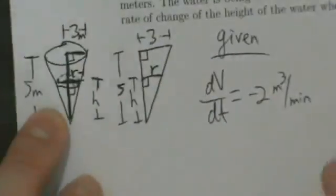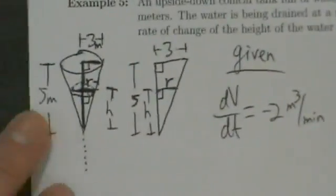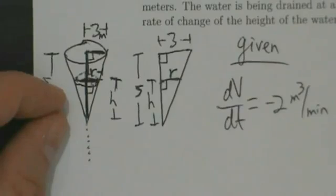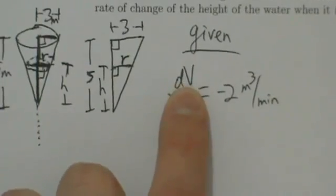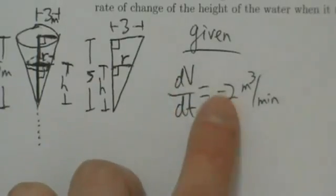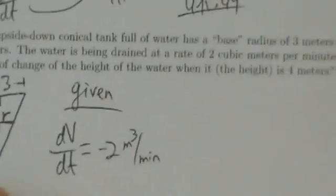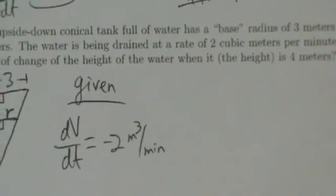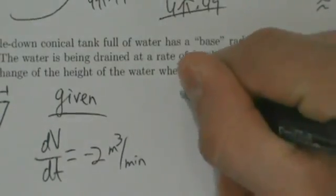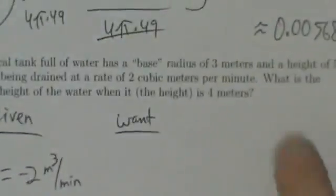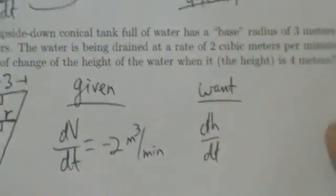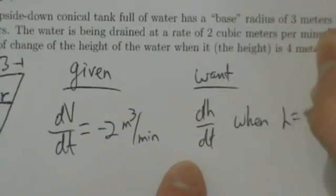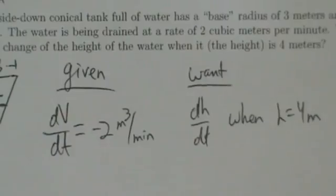The water is being drained out of the tank, so if the water is being drained, the amount of water is decreasing. As time goes on, there's less and less water, which means the total volume is getting smaller. V is a decreasing quantity, so dV/dt should have a negative value because V has a negative rate of change. What do we want? We want dH/dt — the rate of change of the height of the water — when H equals four meters.